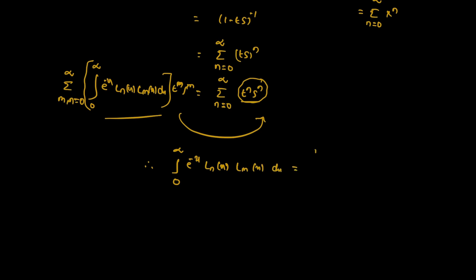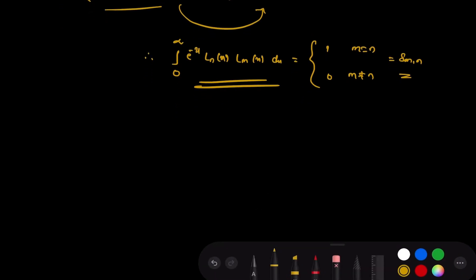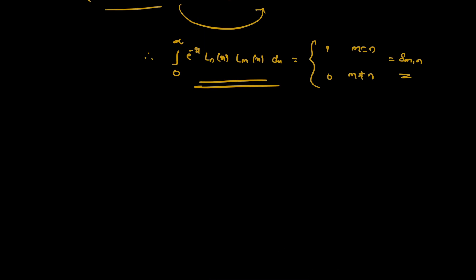Comparing coefficients: when m = n, the integral equals 1; when m ≠ n, it equals 0. So this is the orthogonal property. This is the orthogonal property of Laguerre polynomials — the integral equals delta(m, n).